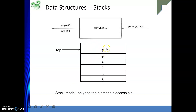This illustrates LIFO — Last In, First Out. The last element inserted (pushed) was 7, so the first to come out is also 7. Some authors also say FILO — First In, Last Out — meaning 6 was the first inserted and it will be the last to come out.